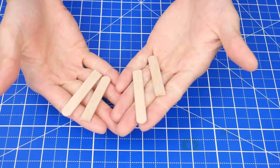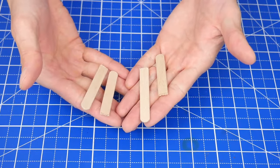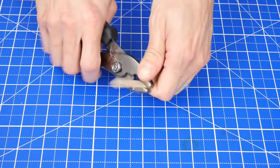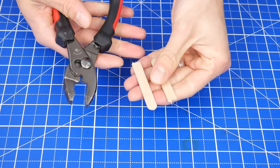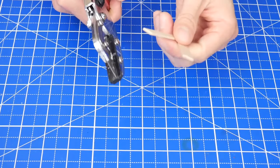First you'll need to cut two craft sticks in half to get four half pieces. You can snap them with a pair of pliers, or you can use a utility cutter and just cut them in half.